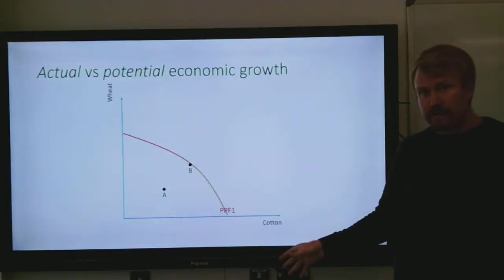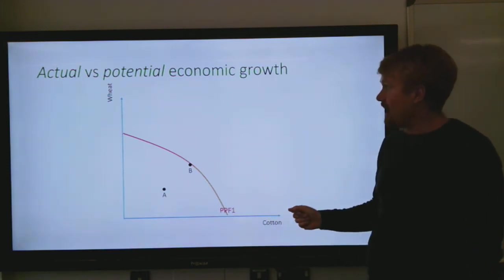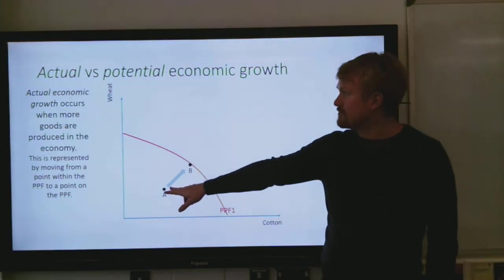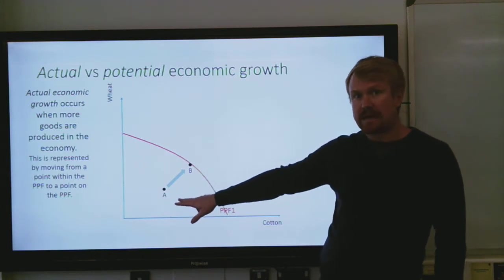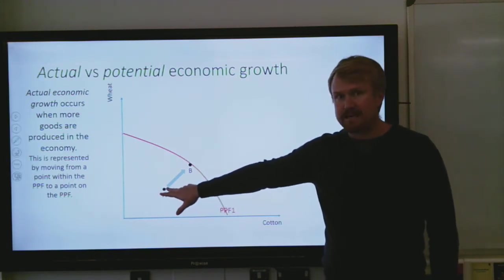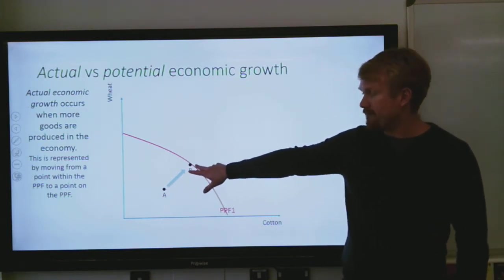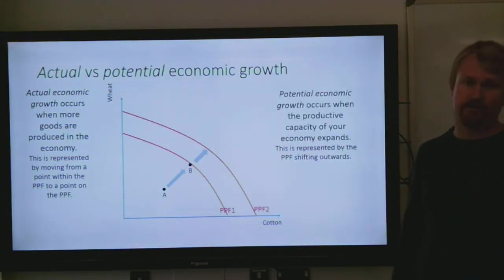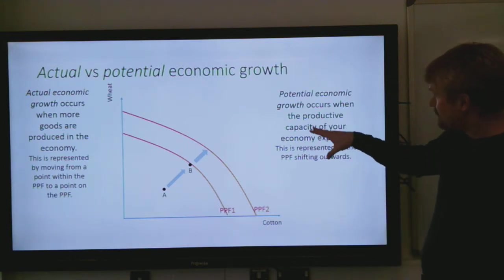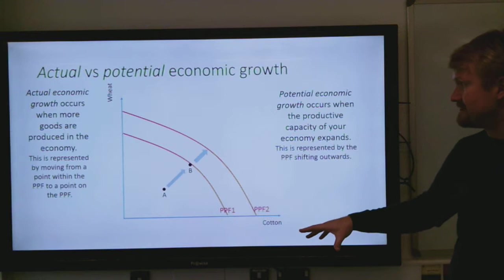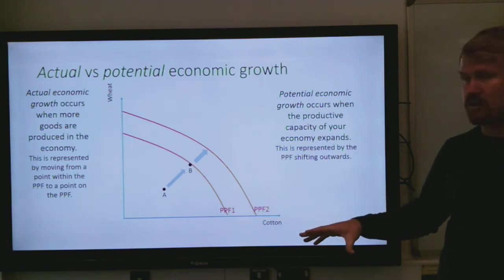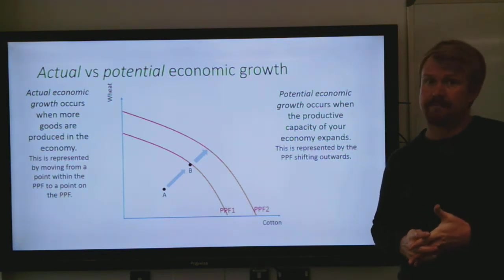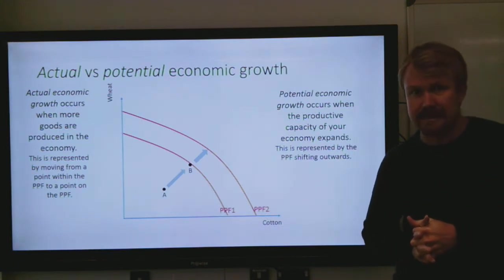The PPF can also show actual versus potential economic growth. Actual economic growth occurs when there are more goods produced in the economy, shown by moving from inside the PPF towards the outside of it — that shows you're producing more, which is actual economic growth. Potential economic growth is shown by a shift in the PPF, which occurs when the productive capacity of the economy expands and is represented by the PPF curve shifting outwards. This will be very important when we start to talk about long-run aggregate supply versus aggregate demand.